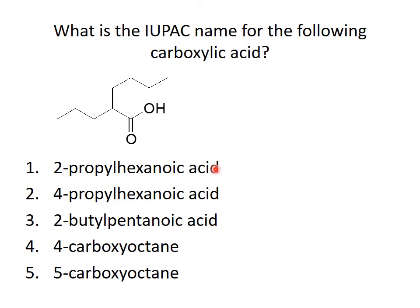Go ahead and name this compound. To name this compound, I have to find the primary chain — the longest chain with the functional group. If I count one way I get five carbons, or counting the other way I get six, so hexenoic acid is the longer chain. Numbering from the functional group as number one, there is a propyl substituent on carbon two. So this is 2-propylhexanoic acid.